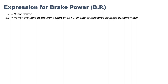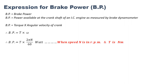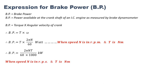Brake power is defined as the power available at the crankshaft of an IC engine, measured by a brake dynamometer. Power is given by torque times angular velocity: P = T × ω, where ω = 2πN/60 when speed N is in rpm. To convert from watt to kilowatt, divide by 1000. The N/60 part converts rpm to rps.